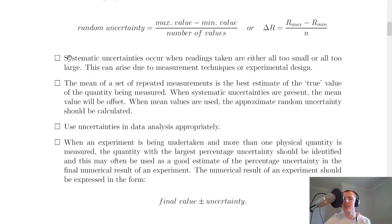Another definition here that you need to know is systematic uncertainties occur when readings taken are either all too small or all too large. This can arise due to measurement techniques or experimental design.